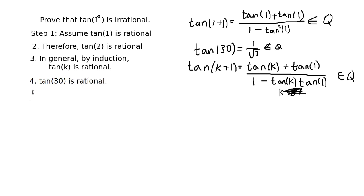But this is our contradiction, because we know that the tangent of 30 degrees is equal to one divided by square root of three. Therefore, we know that our original assumption, that the tangent of one is rational, is incorrect.